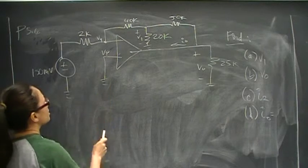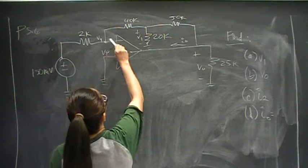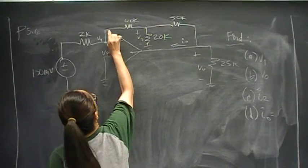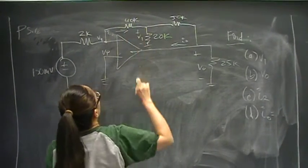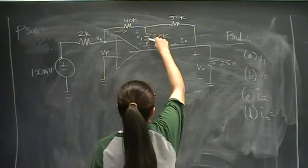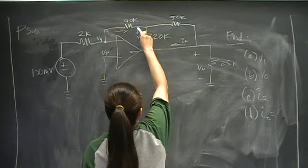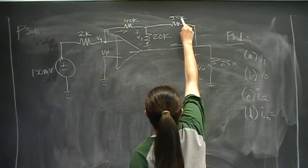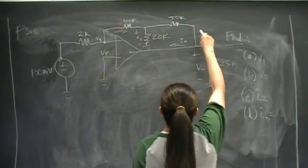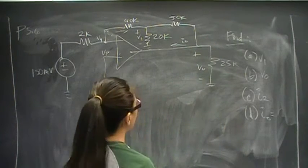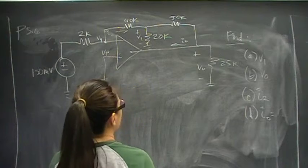The positive terminal is grounded. And we have a negative terminal connected to 40 kilo-ohm resistor, and there is a 20 kilo-ohm resistor connected in T configuration with the 50 kilo-ohm resistor. And there is a 25 kilo-ohm resistor connected to ground.